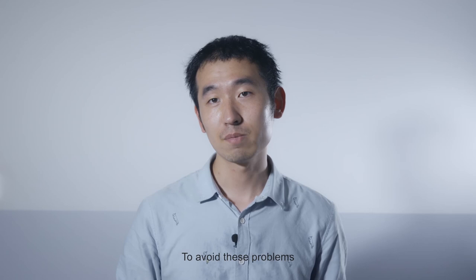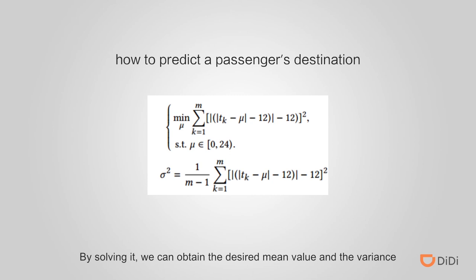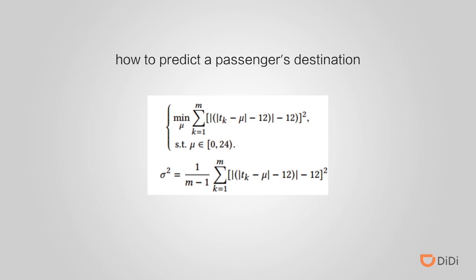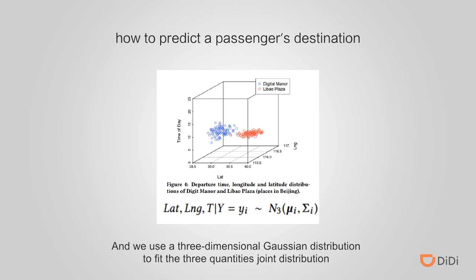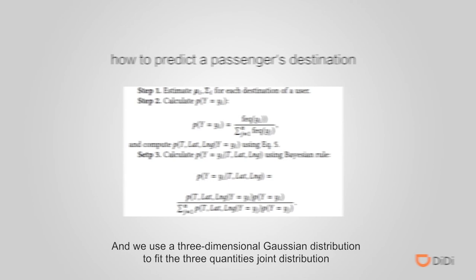To avoid these problems, we formulate a new model. By solving it, we can obtain the desired mean value and variance. Like the departure time, the departure longitude and latitude are also circular variables, so we can use the same method. We then use a three-dimensional Gaussian distribution to fit the joint distribution of these three quantities.